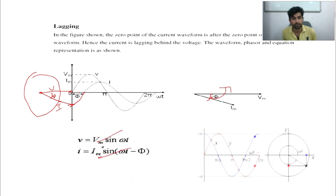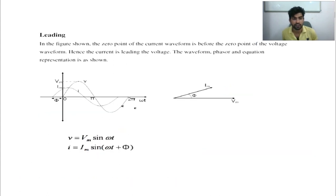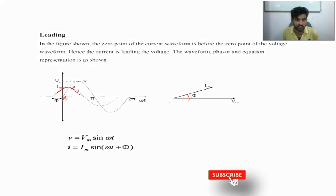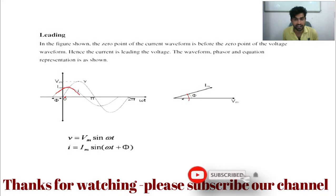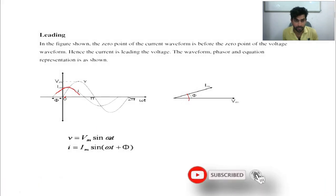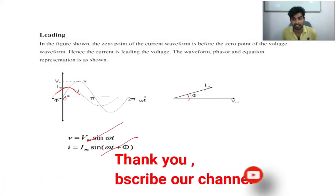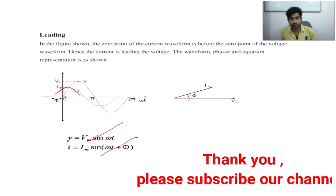Next is leading phase: current leads voltage by an angle phi. Here voltage lags at angle phi. The equations are v = Vm·cos(ωt) and i = Im·cos(ωt + φ). A capacitive load is the example for this condition.